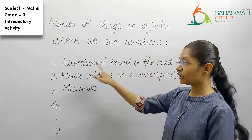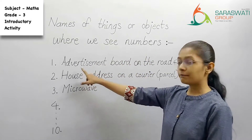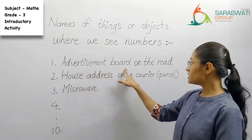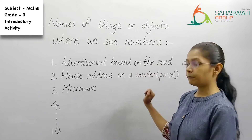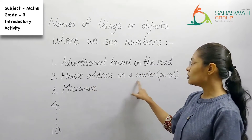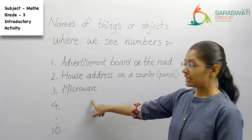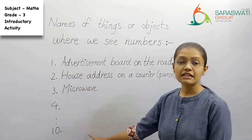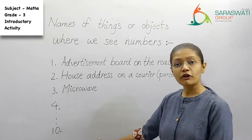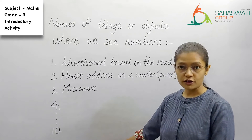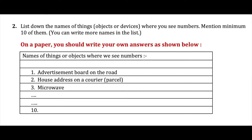Then you have to begin with your list. For example: first, advertisement board on the road; second, house address on a courier parcel; third, microwave. Like this, you have to write 10 names. You can add more number of names if you want. You can pause your video again and go through this same instruction regarding activity 2 right now.